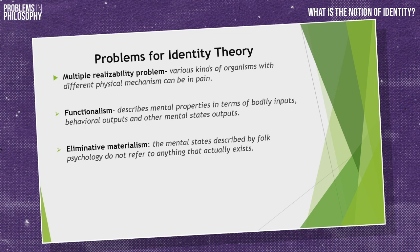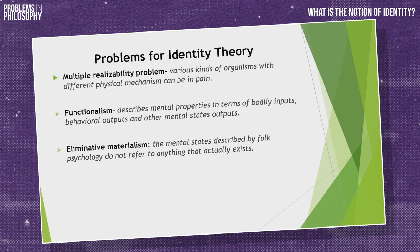Functionalism is a view of mind that focuses on input-output interaction. You have input, you give output — if something scratches my body, I go 'ouch,' I scream, and I ask for help. Mental properties are nothing other than that input-output relation. Some people also proposed eliminative materialism — the mental states described by folk psychology do not actually refer to anything that actually exists. These are alternative ways to deal with the problems that identity theory is said to suffer from.